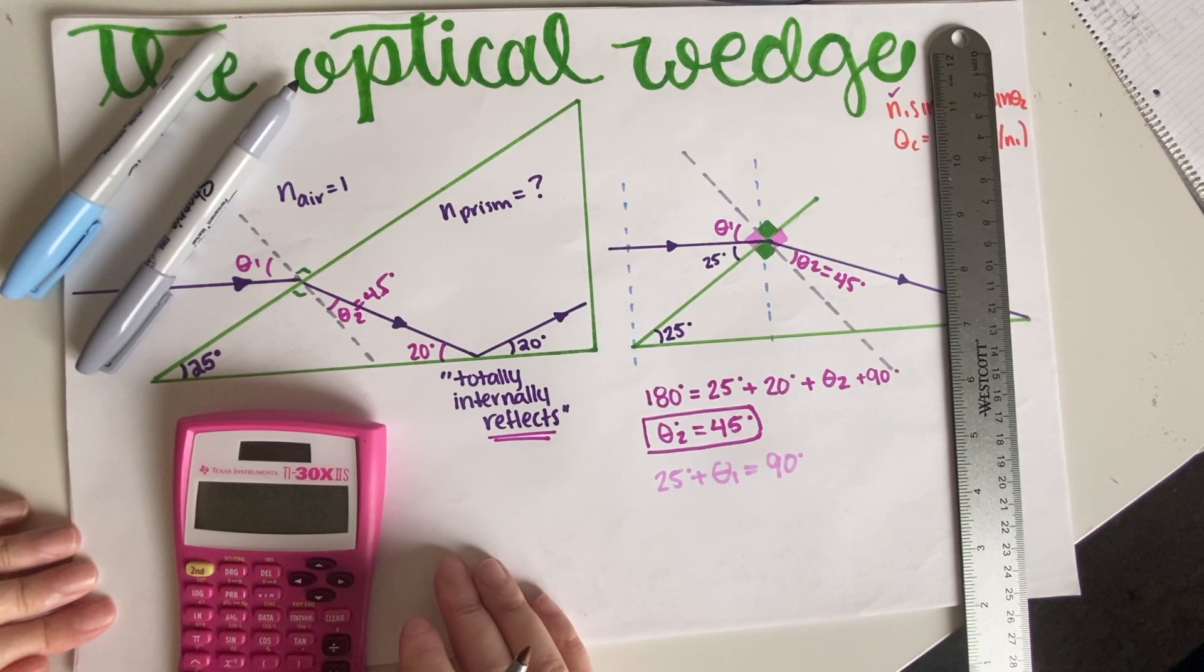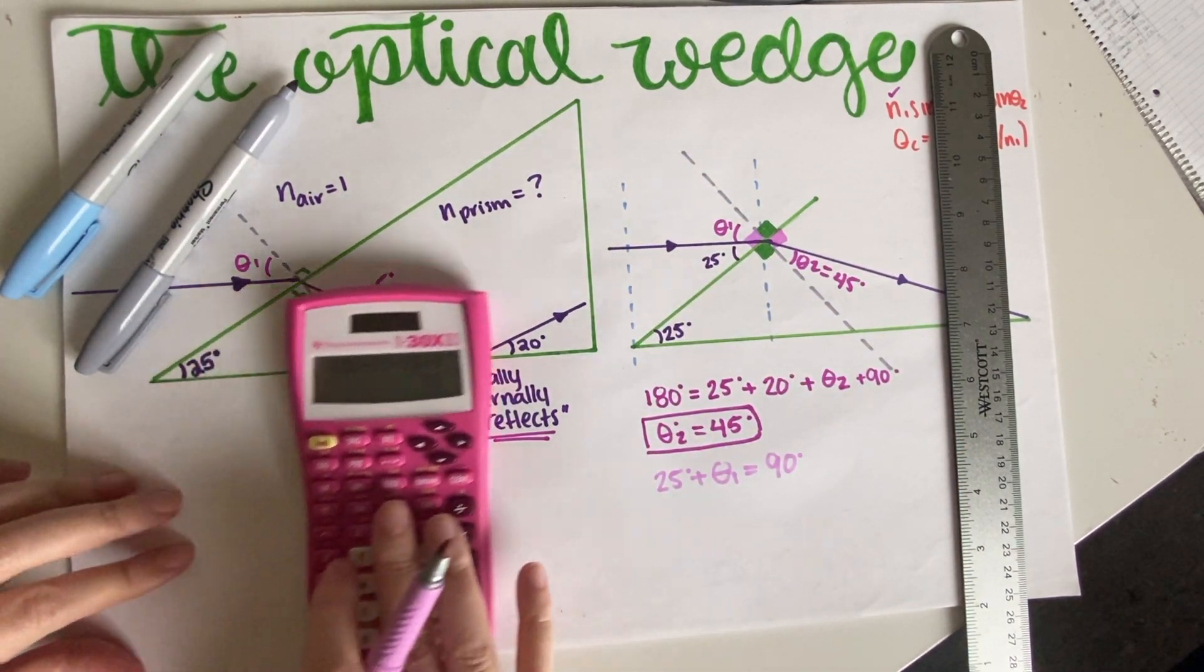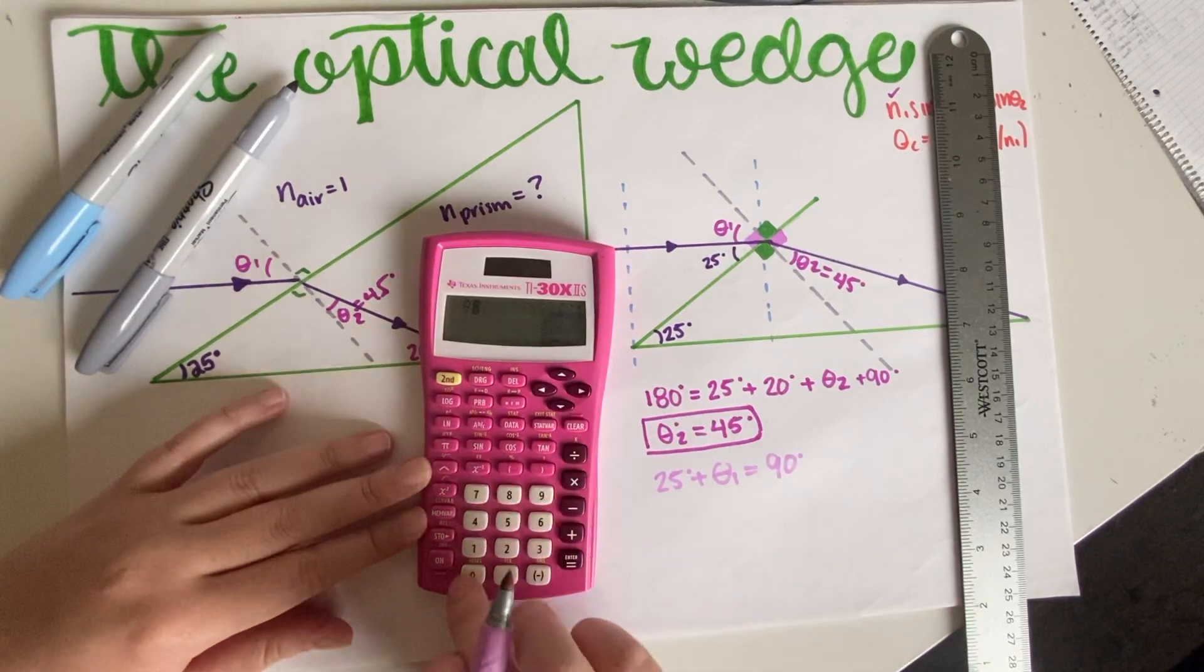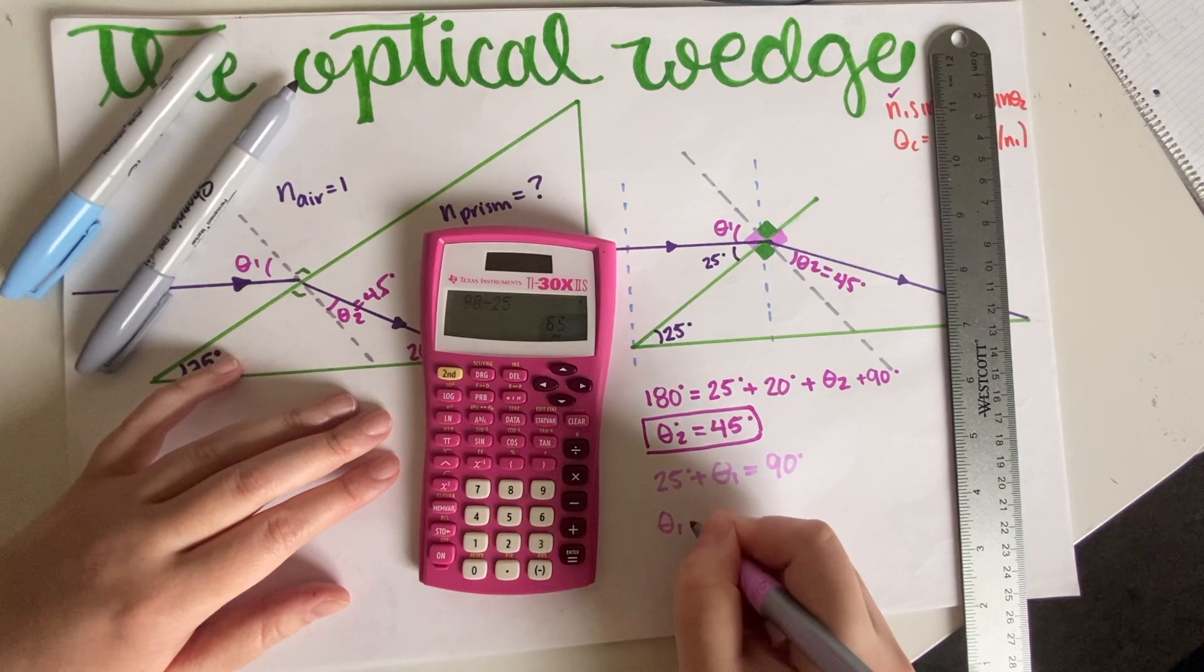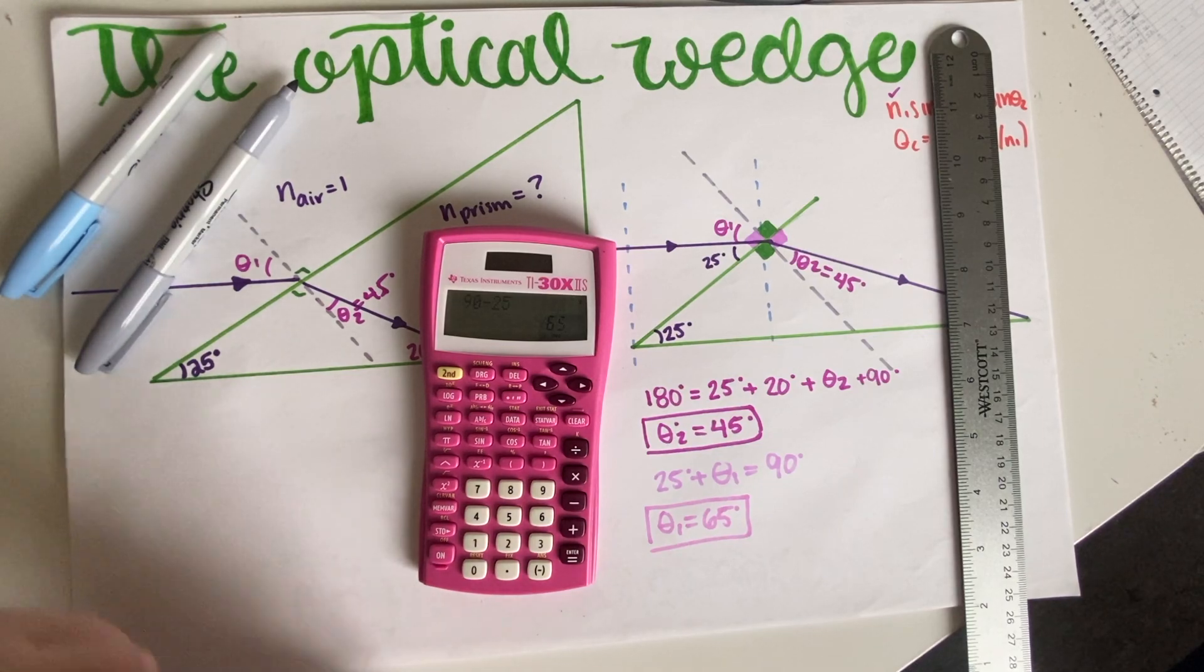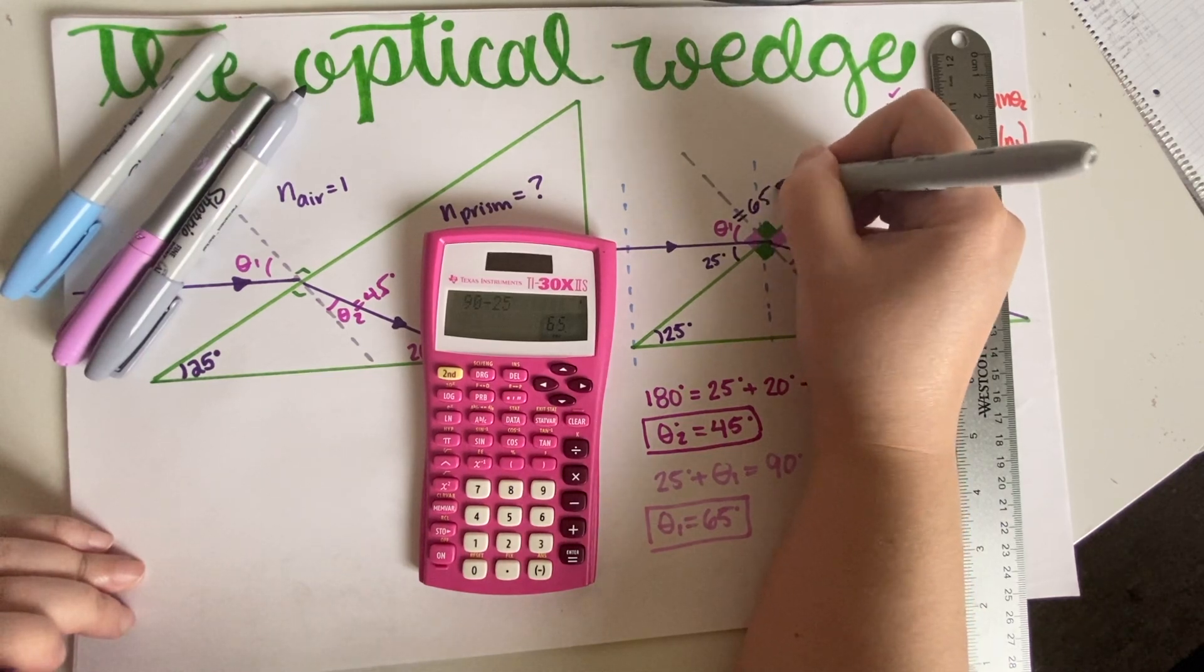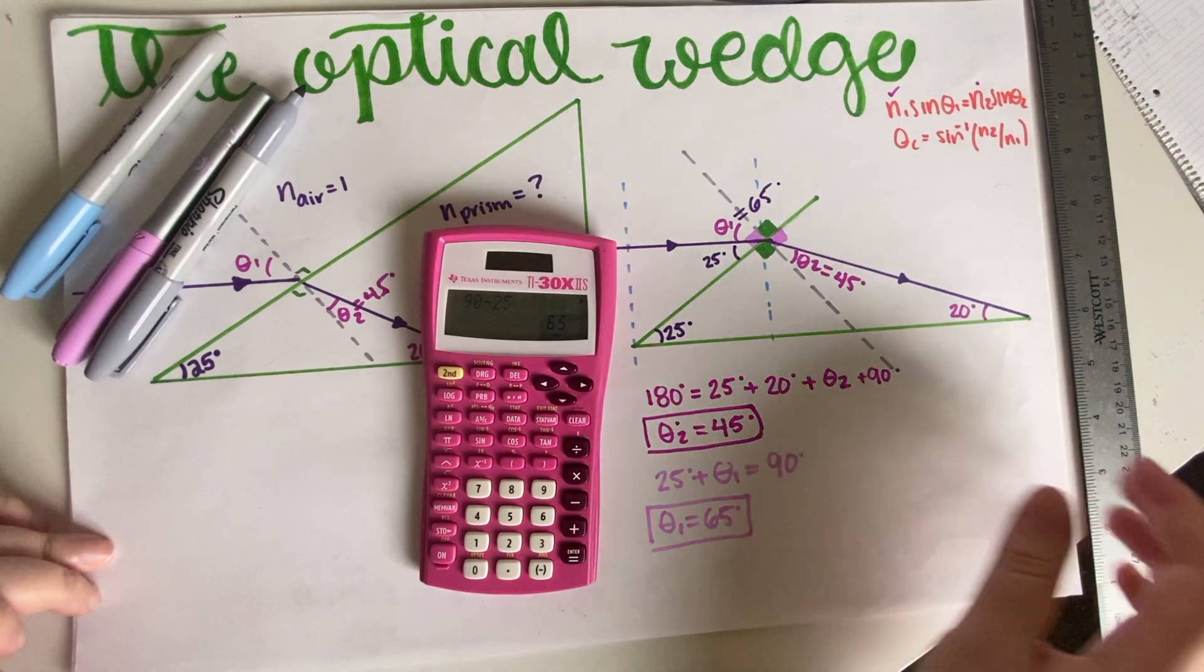So therefore, this little guy over here is what? So 90 minus 25—90 minus 25 is 65 degrees. Let me just write that down over here. So this is equal to 65 degrees, and now we have every angle that we need to finish this quiz.